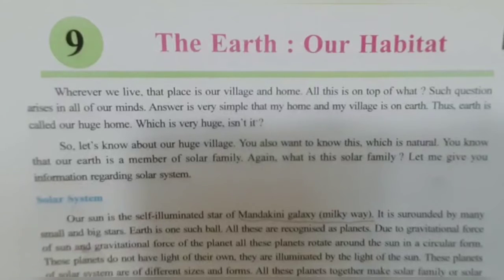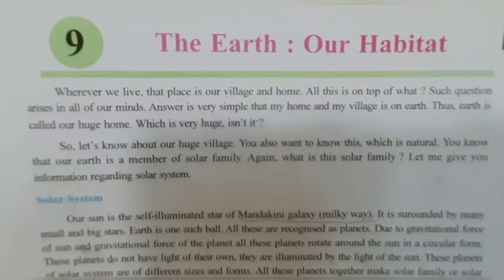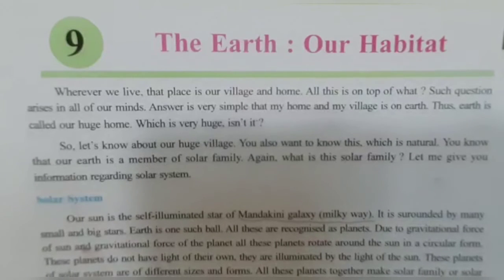Question number 26: What do you mean by an orbit? The earth moves in space in a specific imaginary path or route around the Sun. This route or path of the earth is called orbit.